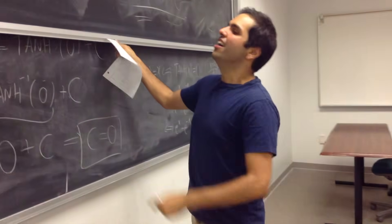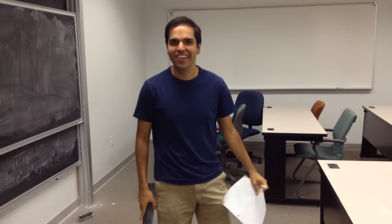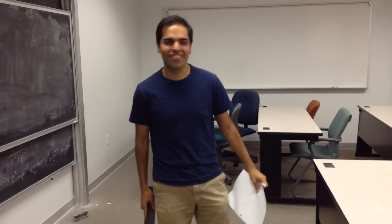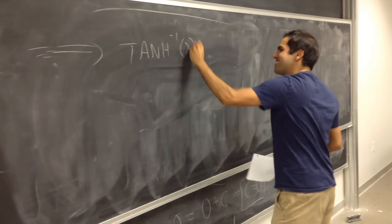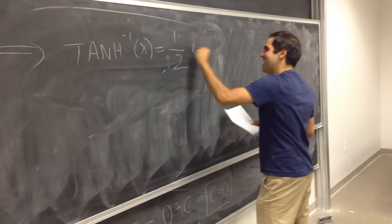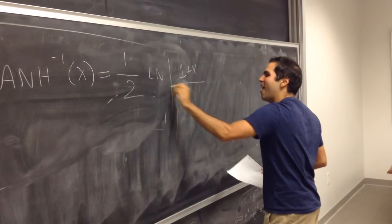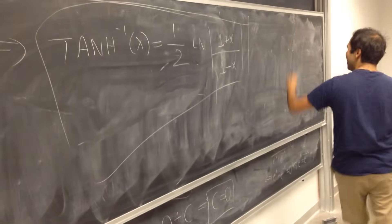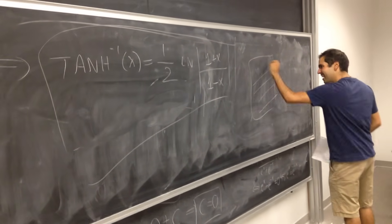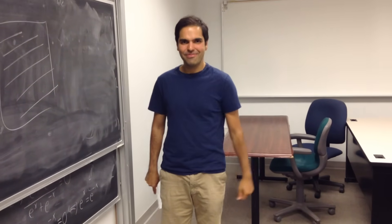So in fact, overall, without further ado, let me give you the main result of today's talk: arctanh(x) equals (1/2) ln|(1 plus x)/(1 minus x)|. Make sure to subscribe to my channel. Thank you, bye bye.